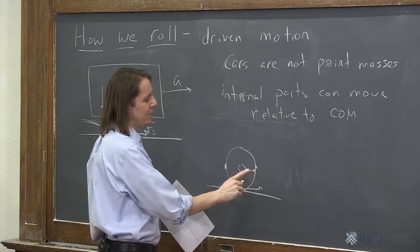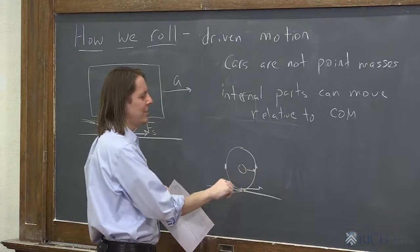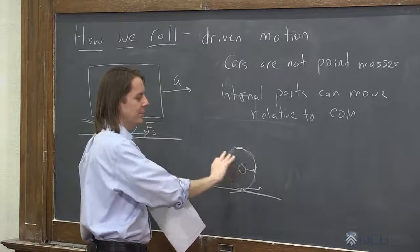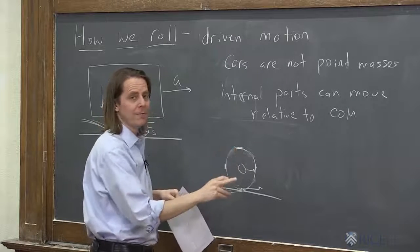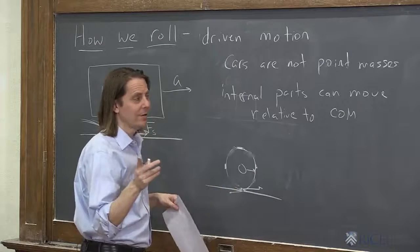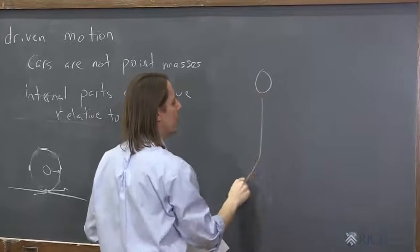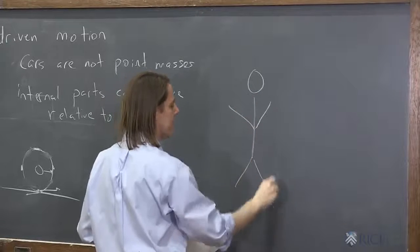So that doesn't sound too satisfying, but let's translate this. Let's imagine they're just pieces of the tire. What if there were just four pieces that it was putting down and moving forward? That's like you walking. So this makes most sense to me if I switch from the car to my feet walking.